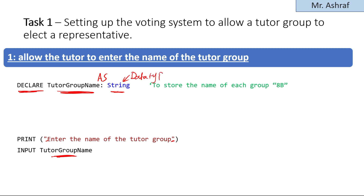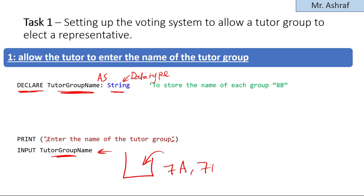Some exam questions will ask about the variables used and their data types. The variable name is TutorGroupName, and the data type is STRING — a string means a group of characters. Think of this variable as a container that will receive the tutor group name, for example 7A, 7B, 8A, 8C, etc. It has to be a string.